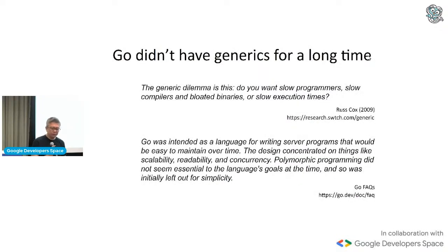Now, Go didn't have generics for a long time, since its inception, in fact. And a lot has been written about it. And basically, this is what the Go team actually wrote about. Russ Cox is one of the leaders in the Go team. He wrote this. He said, the generic dilemma is this. Do you want slow programmers, slow compilers, and bloated binaries, or slow execution times? It's quite controversial, right? A lot of people got really turned off by this. Yeah, he's actually kind of a very blunt person.